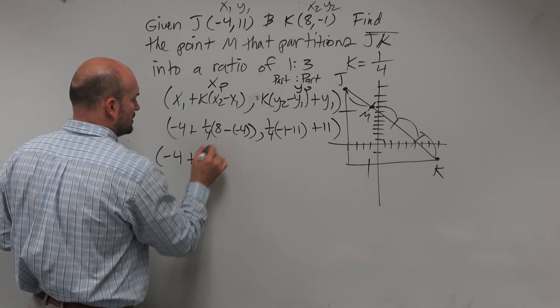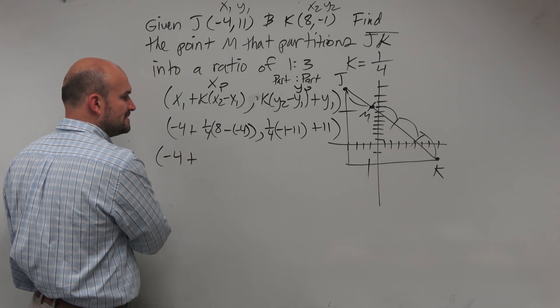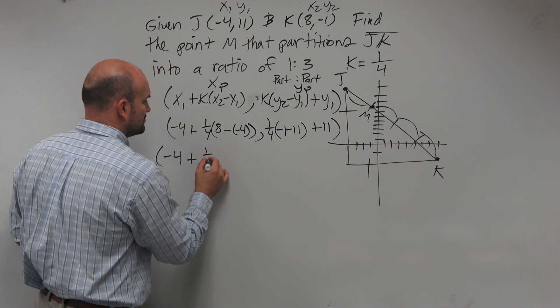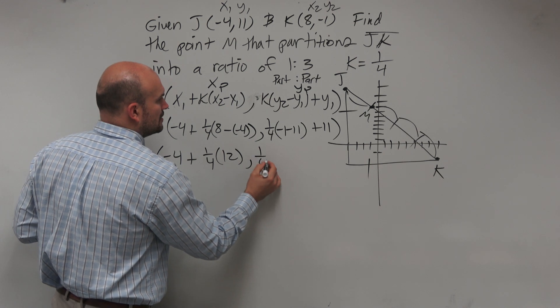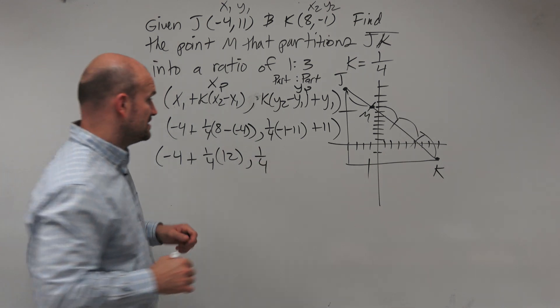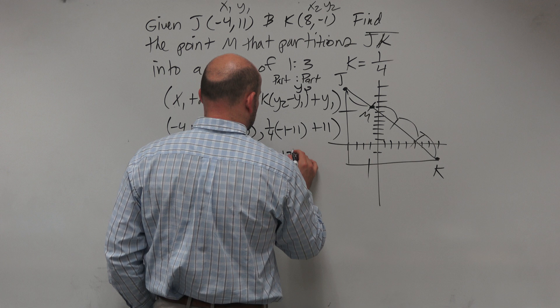So we have negative 4 plus, 8 minus negative 4 is going to be 12. So 1 fourth times 12.